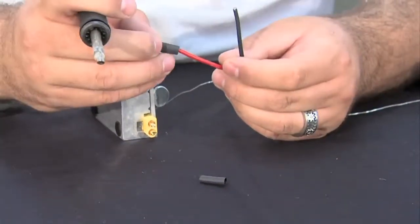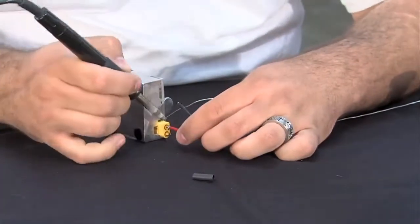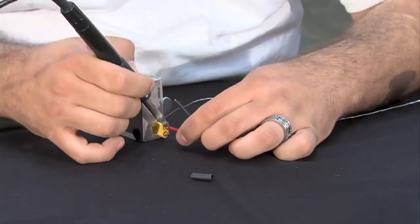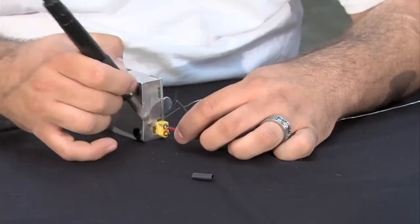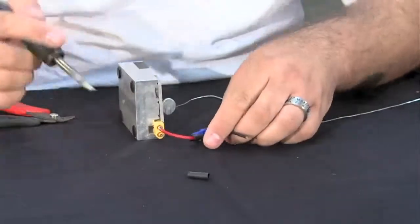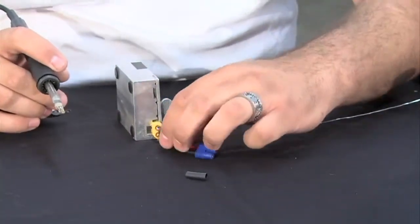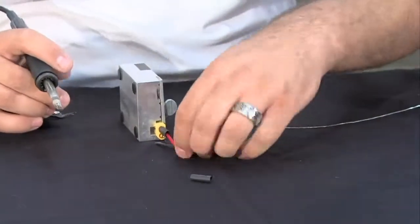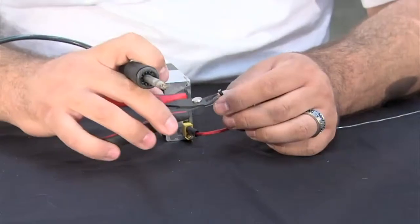Take your heat shrink tubing, slide it on, take your wire, stick it in the cup, and add heat to both of them. And what you're going to do is get a nice flow covering your connector. Once that's done, you can slide your heat shrink tubing down, add your heat shrink tubing to the other end, and strip that wire. Again, one eighth.